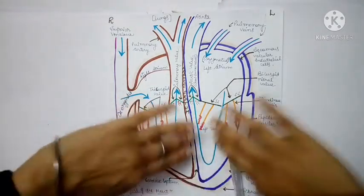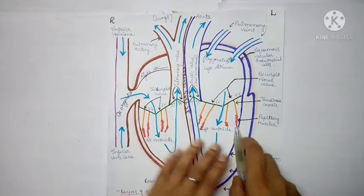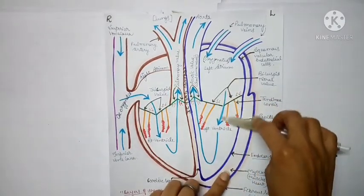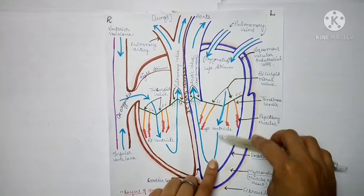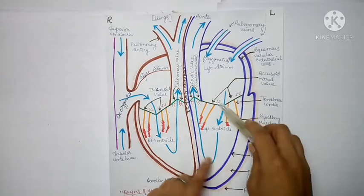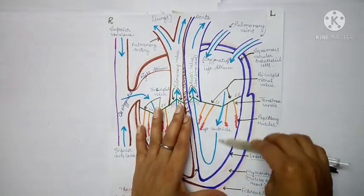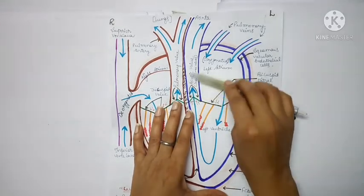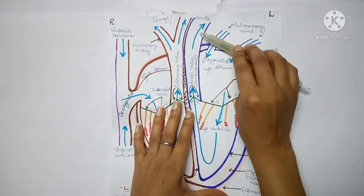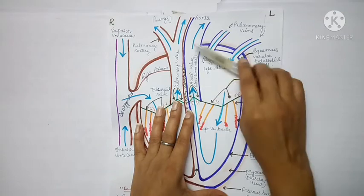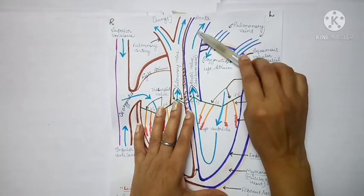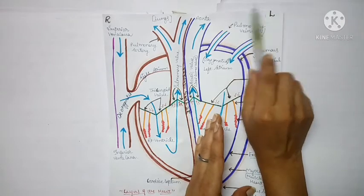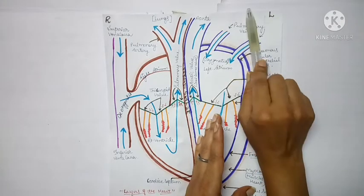The mitral valve opens and closes, open and close. When it is open, blood passes from the left atrium down to the left ventricle. Then pressure is generated here, and with that pressure gradient, this blood goes through the aorta.